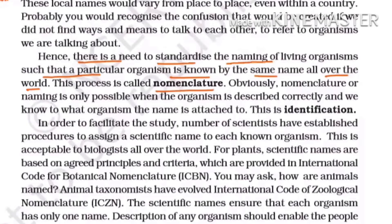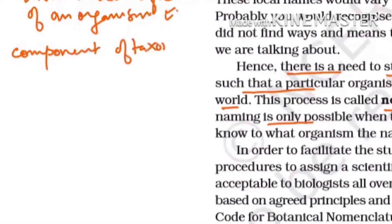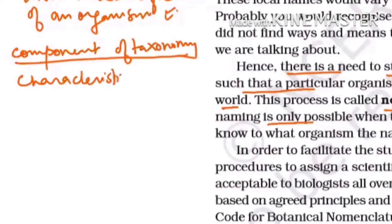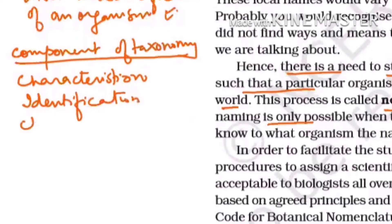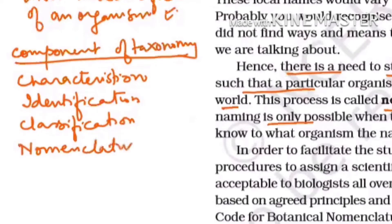Before naming, we should identify organisms, and nomenclature is possible only when the organism is described correctly — that is identification. For identification, you should have a list of characteristics. After identification, you classify them into proper categories, and finally you give the name through nomenclature. These are the components of taxonomy.